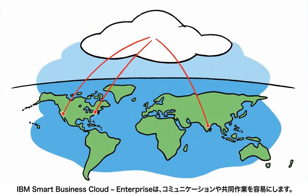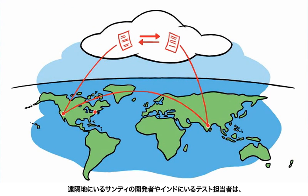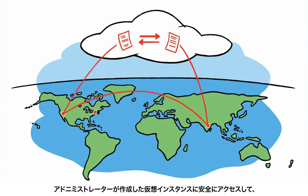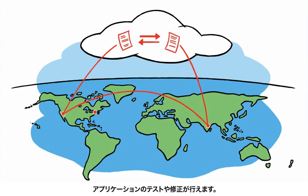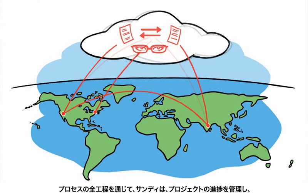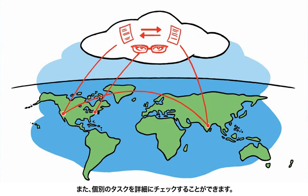IBM Smart Business Development and Test on the IBM Cloud facilitates communication and collaboration. Savvy Sandy's developers on the opposite coast and her testers in India securely access the virtual image her administrator created, test the application, and implement a fix. Throughout the process, Savvy Sandy has visibility into the project and can drill down into individual tasks.